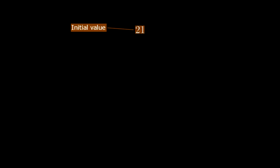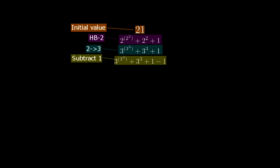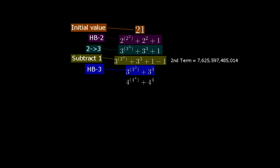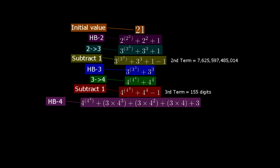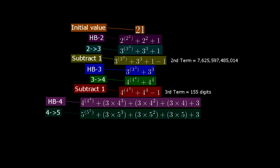We are now ready for Goodstein sequences. Begin with any integer — let's say 21 in hereditary base 2 notation. The second term is found by replacing all 2s with 3s, then subtracting 1, which comes to about 7.6 trillion. Then write this value in hereditary base 3 notation. The third term is found by replacing all 3s with 4s, then subtracting 1 — this value has 155 digits. Next, write this value in hereditary base 4 notation. The fourth term replaces all 4s with 5s and subtracts 1, reaching 2185 digits.